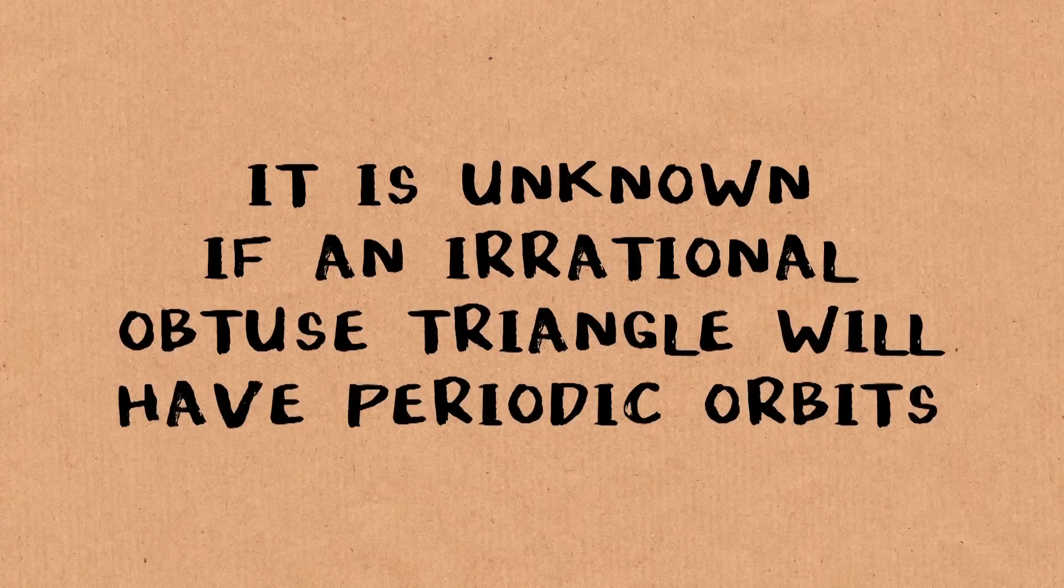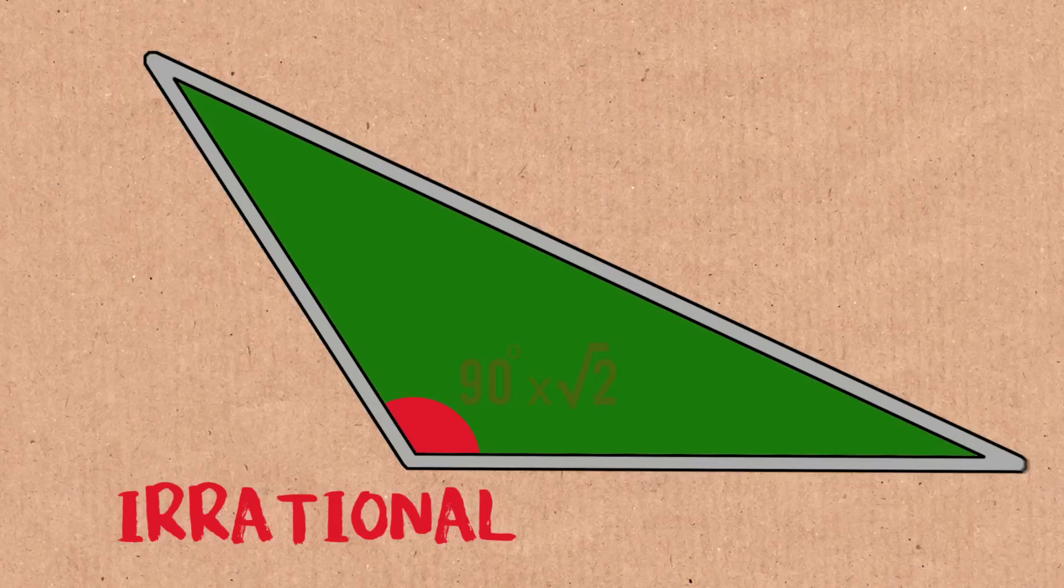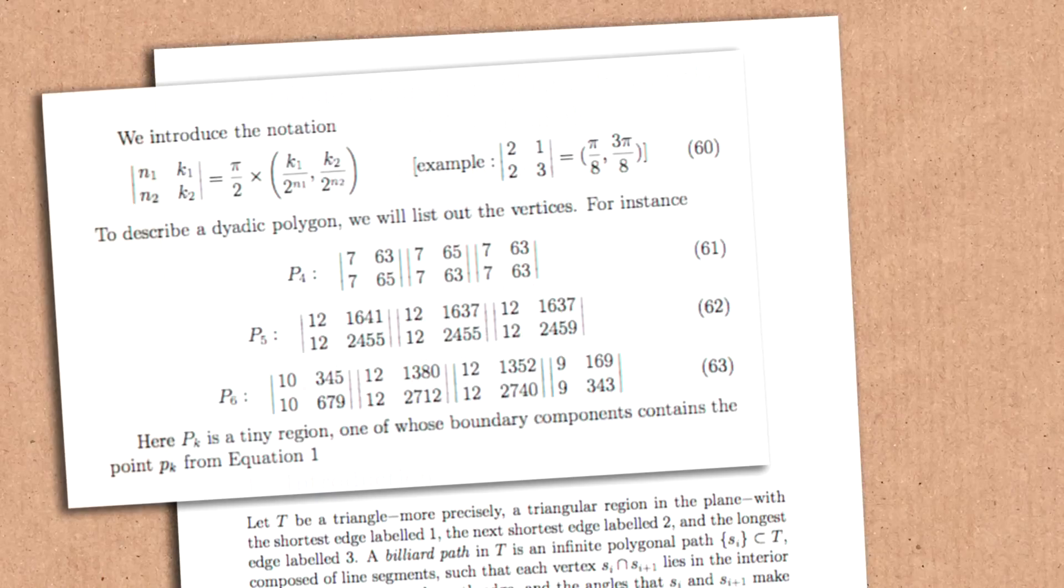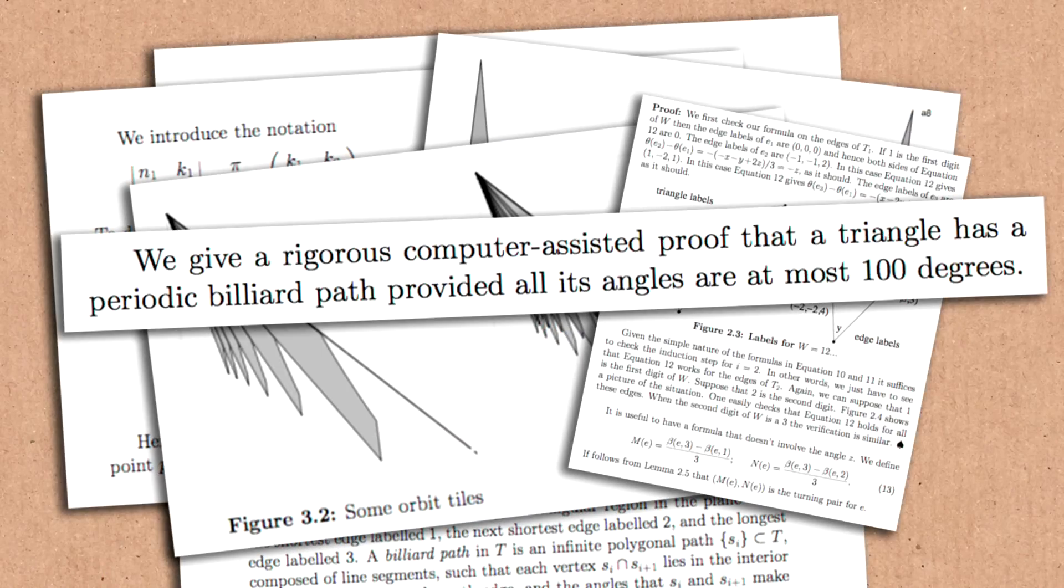So this is a famous unsolved problem in the subject of dynamical systems. If the obtuse triangle is rational, then there are periodic orbits. So I'm talking about obtuse triangles. I think I gave an example, 90 times square root of 2. That particular one, I would not be able to tell you if it had a periodic orbit. There are some recent people by very hard work have shown if this angle is less than 100 degrees, then there are periodic orbits.